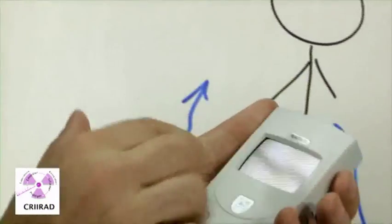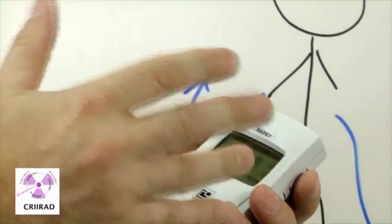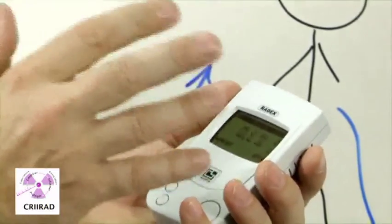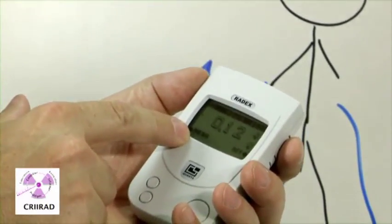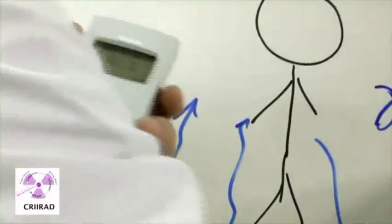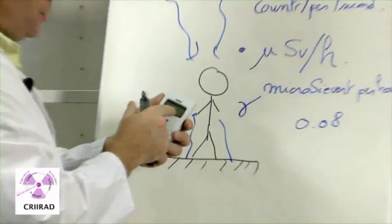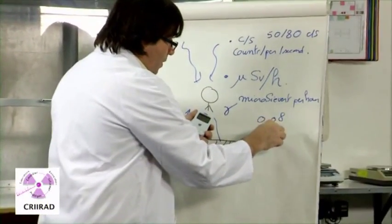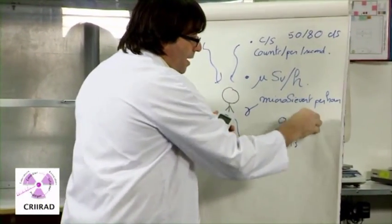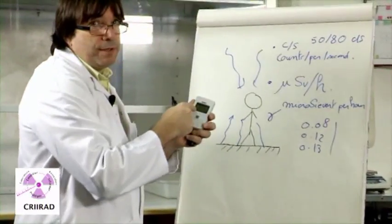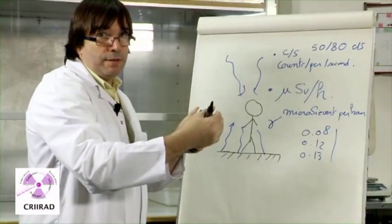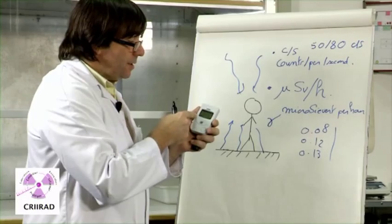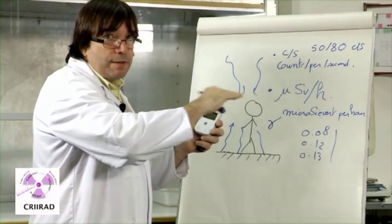So, the measurement will take, let's say, 2 to 4 minutes. At this moment, we have 0.08 microsieverts per hour. Now, 0.12, 0.13, and I am waiting for it to finish its counting cycle, so that it will give us a correct value.